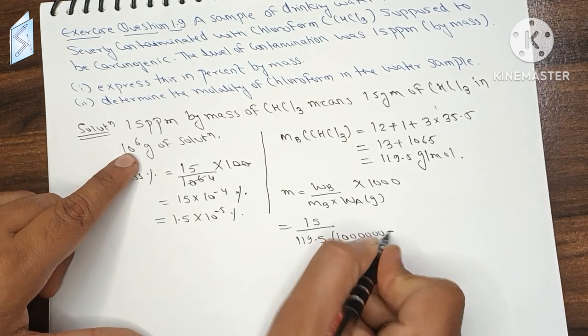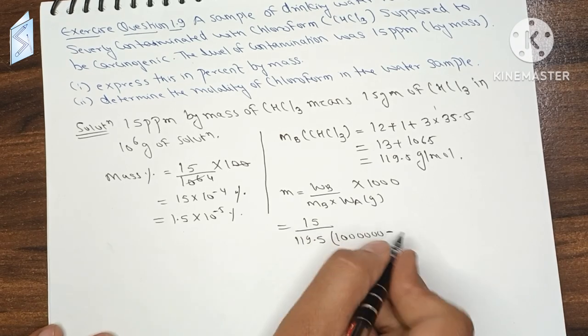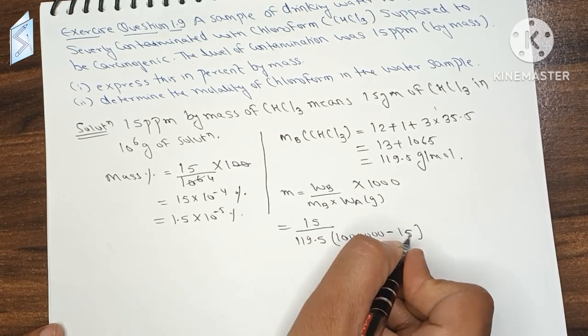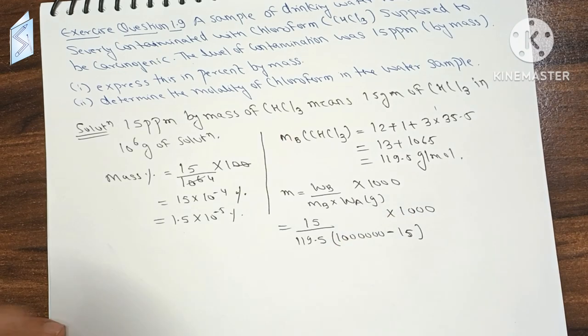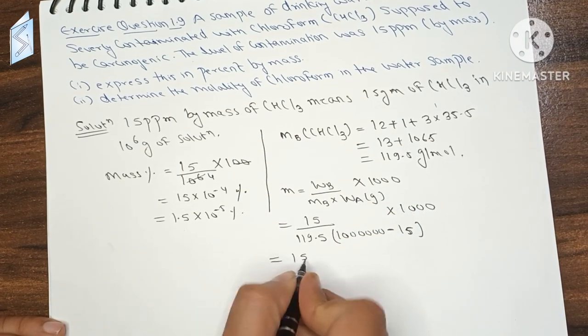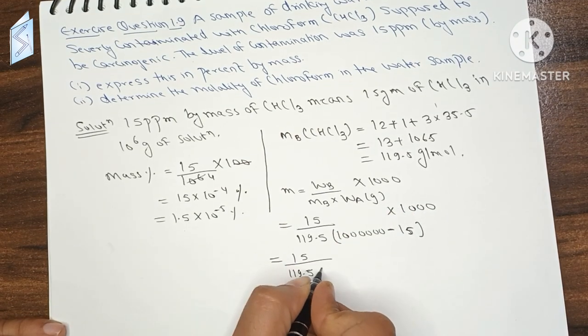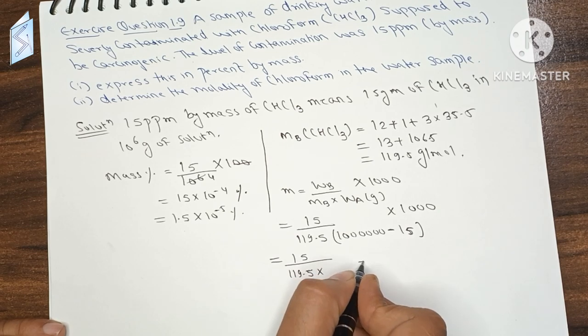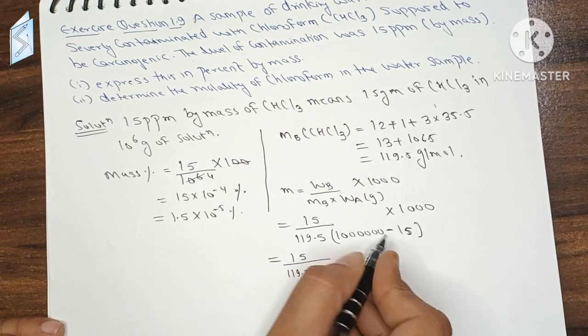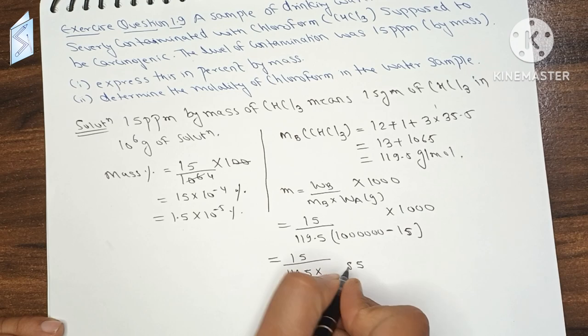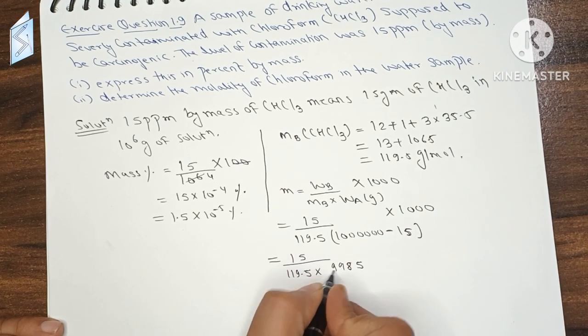So 15 upon 119.5, and the solvent mass is 999,985 grams.